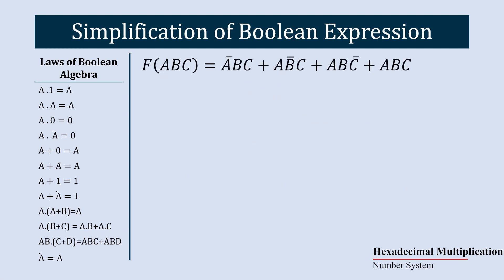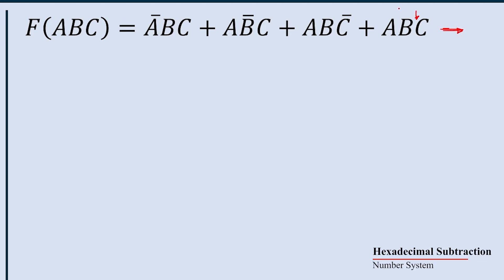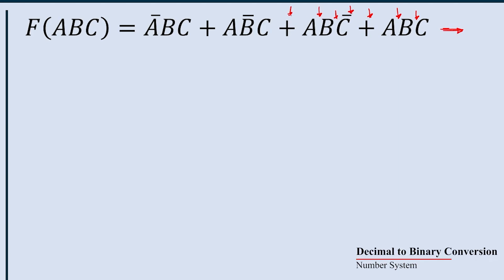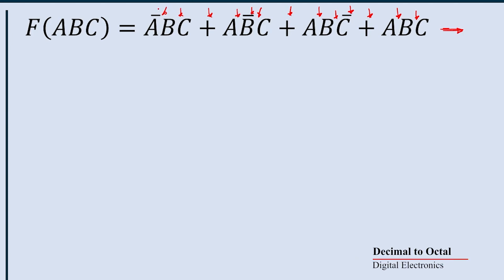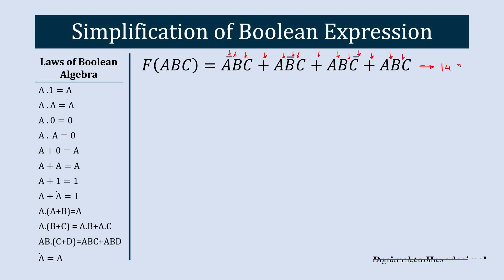This is our new complex equation. First, let's see how many gates we are supposed to use to implement this equation: AND gate, another AND gate, OR gate, NOT gate, AND gate, AND gate, OR gate, AND gate, NOT gate, AND gate, OR gate, AND gate, AND gate, AND gate, NOT gate. 1, 2, 3, 4, 5, 6, 7, 8, 9, 10, 11, 12, 13, 14 — so we are supposed to use 14 gates to represent this equation.